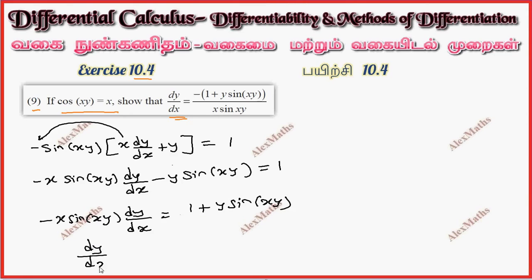dy by dx: this one is denominator, so 1 plus y sin of xy whole divided by x sin of xy. With minus sign, so this bracket put to go.